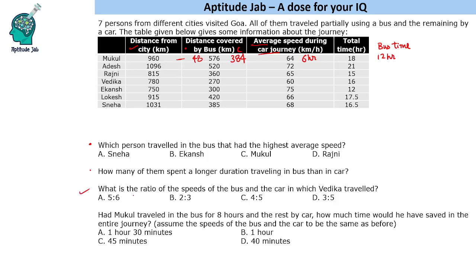The person-specific question should be attempted first because it requires calculation for only one individual. In an examination scenario, you should tackle the two person-specific questions and move on, because the two global questions take a lot of time. The third question asks: what is the ratio of the speed of the bus and the car in which Vedika travelled?